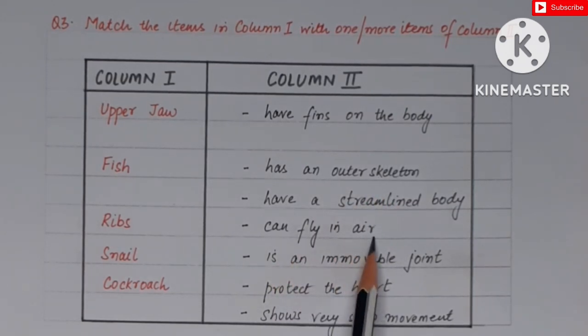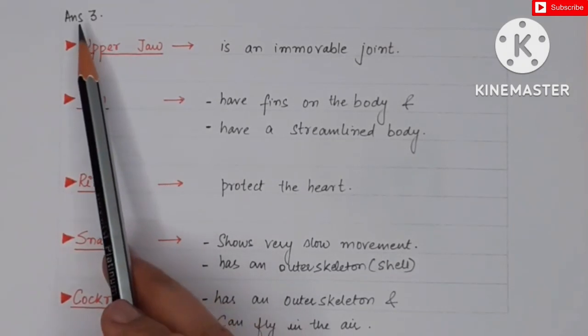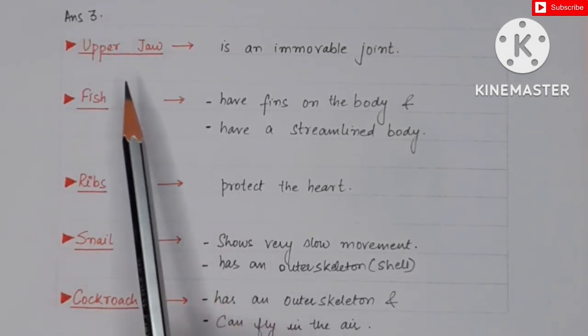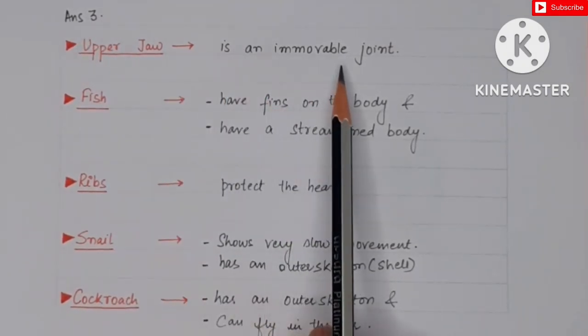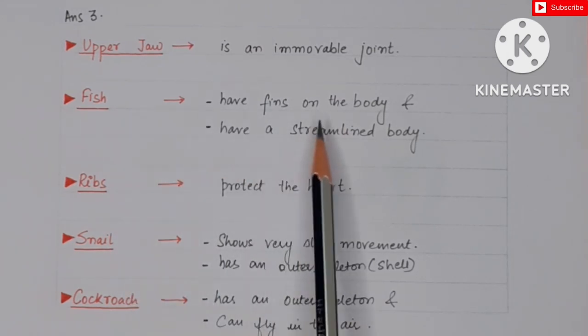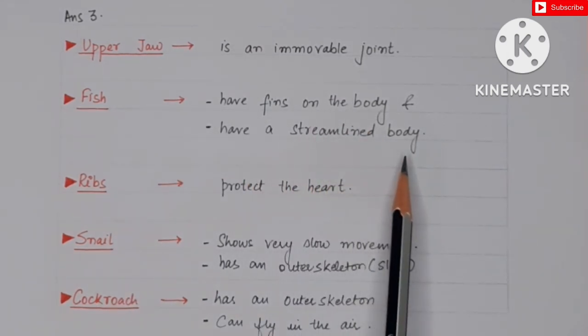Then cockroach: cockroach body also has the outer skeleton and it can also fly in the air. So we can write the answer of question number 3 as: upper jaw is the immovable joint, then fish have the fins on the body and they have the streamlined body, then ribs protect the heart, and snail shows very slow movement and it also has the outer skeleton which is called shell, then cockroaches also have the outer skeleton and they can fly in the air as they have wings in their body.